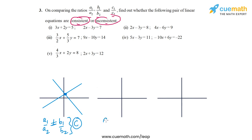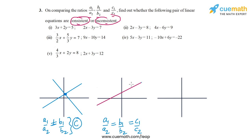The second possibility is that A1/A2 equals B1/B2 equals C1/C2 — all three ratios are equal. In this case, the lines representing the pair of equations will be identical, meaning the first and second lines will be coincident. All points on one line will be common to the second line, so this pair will have infinitely many solutions. Therefore, this pair is also consistent.